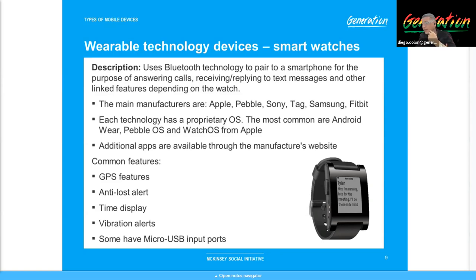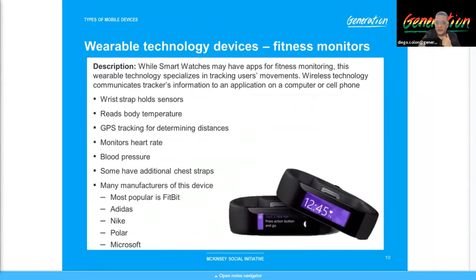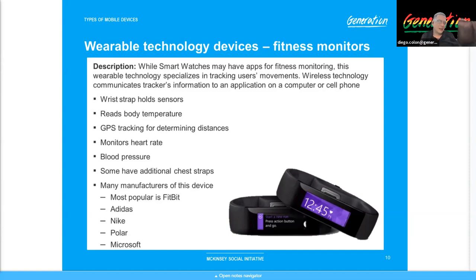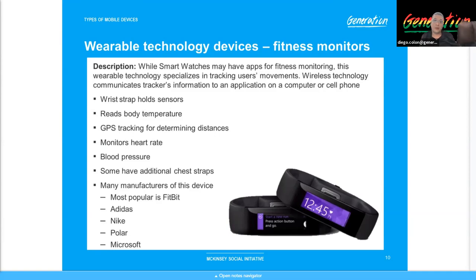Dick Tracy invented this concept back in the 1930s and everybody thought it was the dumbest thing in the movie — who would ever talk to their watch? A hundred years later, here we are. These things have all different functions. Fitbits do fitness tracking. Apple hopped on this and went even further — the Apple Watch not only does all that but actually monitors your heart rate and can perform a cardiogram. It's just incredible what these smart wearable devices are able to do.